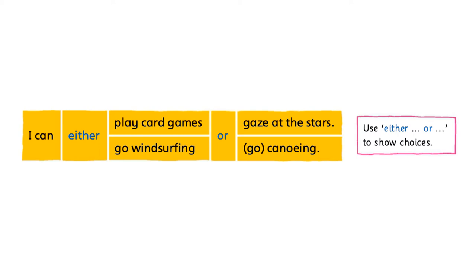There are many occasions where we would use either or. For example, choosing a country to go for a family trip, or choosing which summer class to take in the summer holiday.